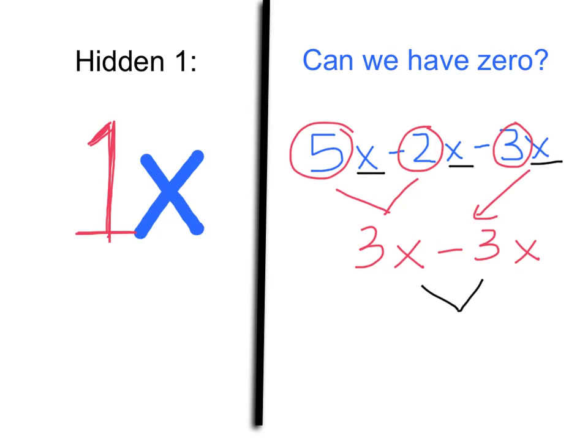So then if I have this, I would have 1, 2, 3x's and I would take them away. And I'm actually left with 0x's, which I know is just 0 times x. And that's the same thing as an answer of 0.